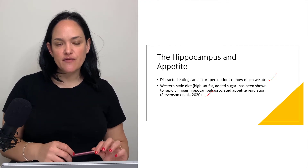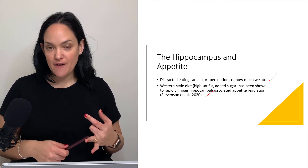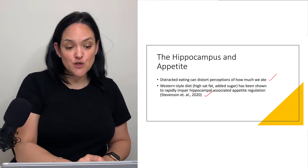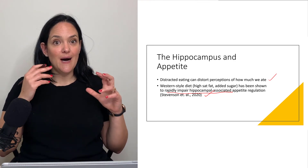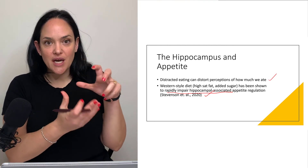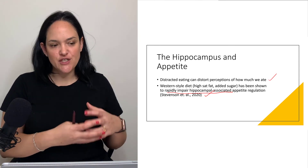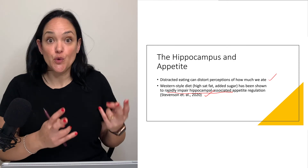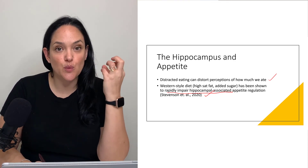Something really interesting that newer studies have taken a big focus on is that a Western-style diet — higher in sugar and saturated fat, more processed foods — has been shown to rapidly, like within hours and within days, impair hippocampal-associated appetite regulation. This has been shown both in humans and in mice. This makes sense because the Western-style diet full of highly processed food is a nutrient organization our body doesn't recognize as what food should be like — it's like Franken-food — which might provoke changes in the hippocampus and our ability to perceive what we are eating and ensure we're eating an appropriate amount.